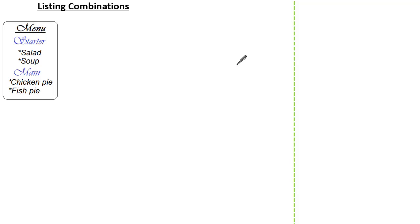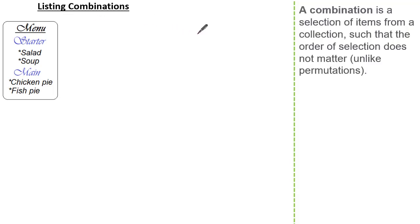Hello everyone and welcome to this tutorial on listing combinations. Let's look at the keywords, starting with combination. In mathematics, a combination is a selection of items from a collection such that the order of the selection does not matter, unlike permutations.